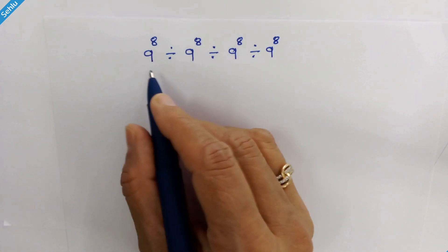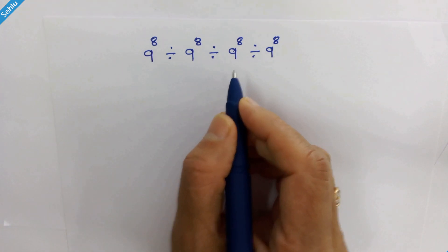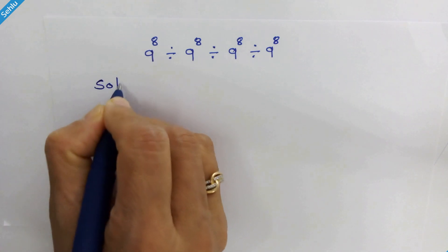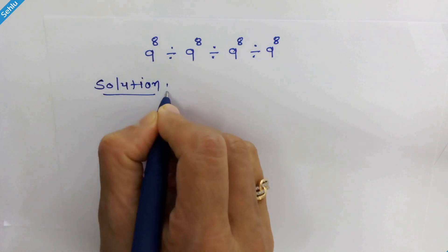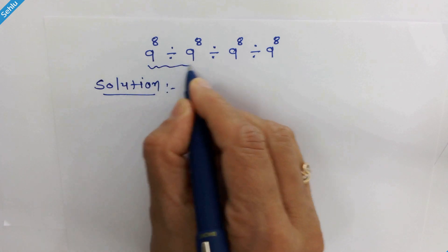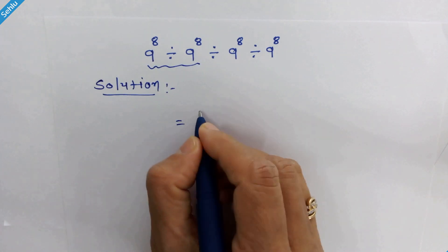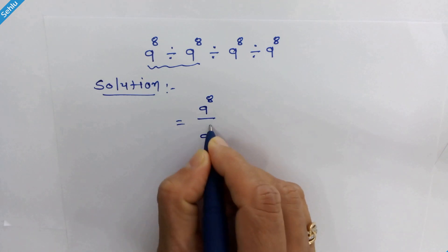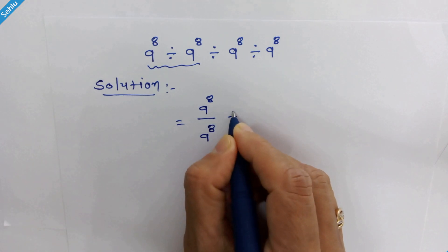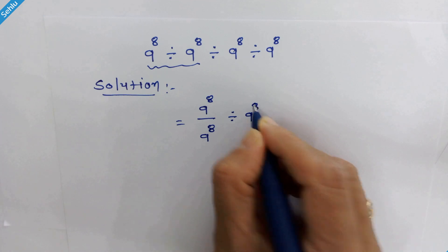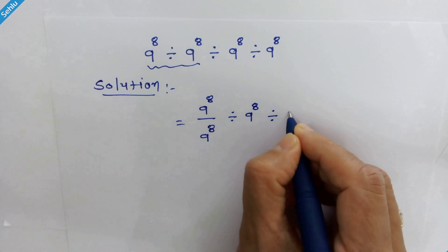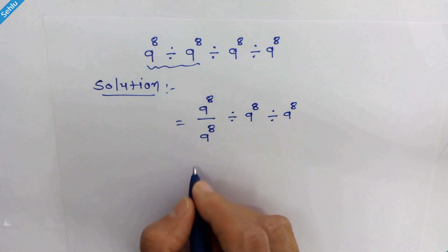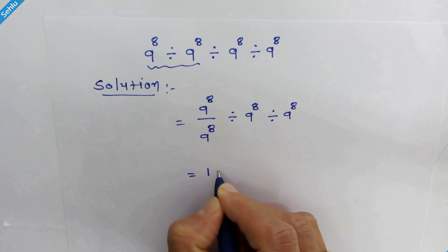Hello friends, this is our question. How do we simplify this? Let's start. First we will operate these two, and it can be written as 9 raise to 8 upon 9 raise to 8, divide by 9 raise to 8, divide by 9 raise to 8. 9 raise to 8 upon 9 raise to 8 will be 1, so we can write 1.